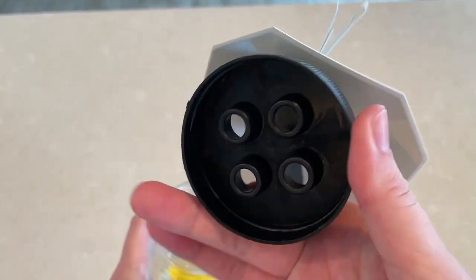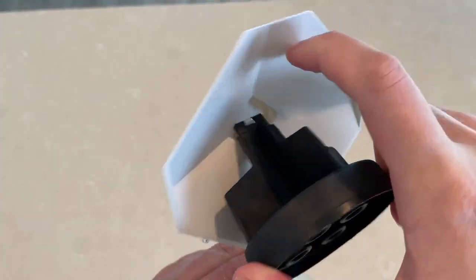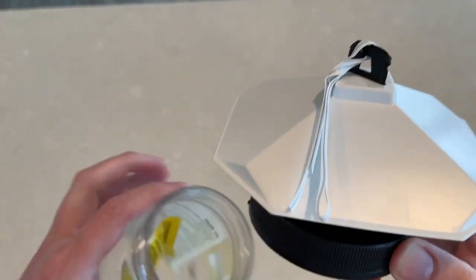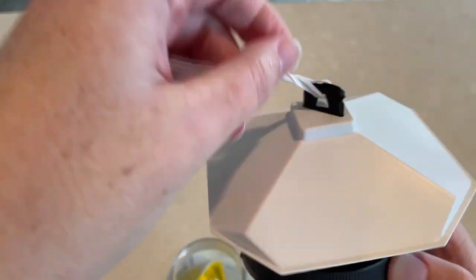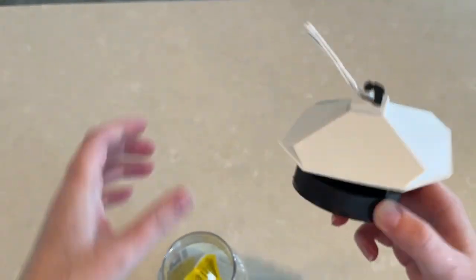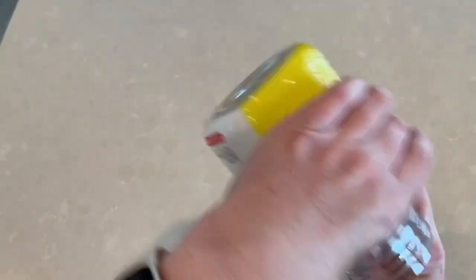It has these holes in the top and the flies fly under the white part and go in the holes and into the container. You can hang it with this twist tie or there's a little hole there.